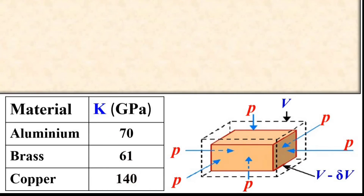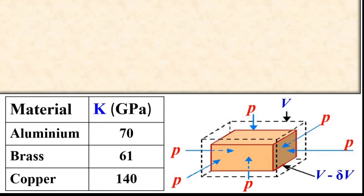Only half pressure is required to reduce the aluminium sphere compared to the copper sphere of the same initial size, because aluminium has half the bulk modulus of copper. Under equal pressure, the proportional decrease in volume of aluminium is two times that of copper.